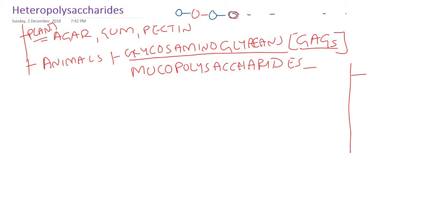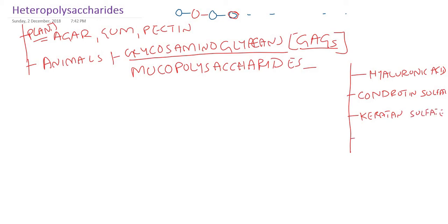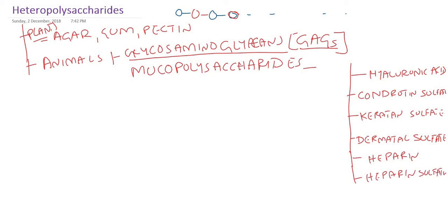Examples of mucopolysaccharides include hyaluronic acid, chondroitin sulfate, keratan sulfate, dermatan sulfate. You can see a lot of sulfate, which means the majority of mucopolysaccharides are sulfated — except hyaluronic acid. Also heparin and heparin sulfate. These are the examples for glycosaminoglycans or GAGs or mucopolysaccharides.